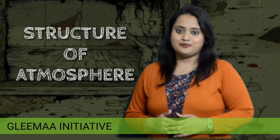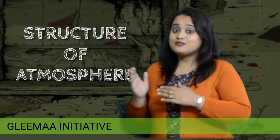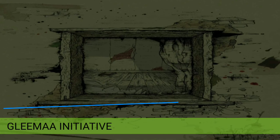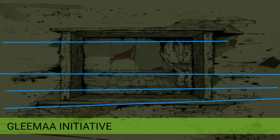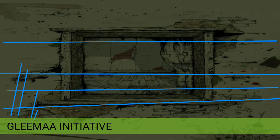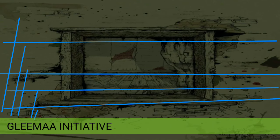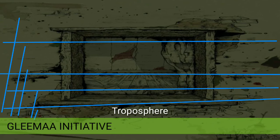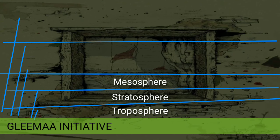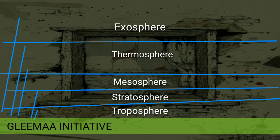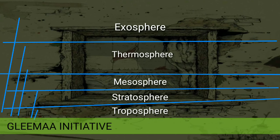Now we will directly move to the structure of atmosphere. Take a close look at the picture. Earth's atmosphere is made up of a series of layers with different sets of characteristics. These are troposphere, stratosphere, mesosphere, thermosphere and exosphere.